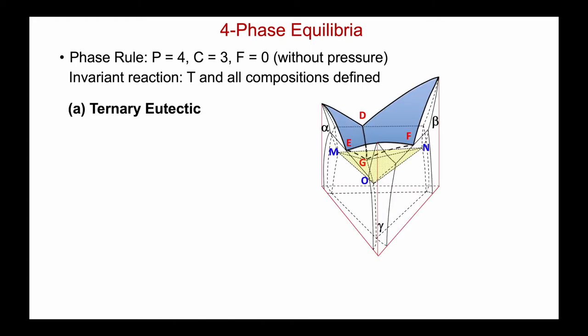First, we'll look at a ternary eutectic, where every binary contains a eutectic. The three eutectic valleys meet at a common point, which is called the ternary eutectic. Here's our space diagram: AB has a eutectic, BC a eutectic, AC a eutectic. The eutectic liquids in each of those three binaries are D, E, and F — they're all rolling downhill — and they meet at G, which is the ternary eutectic liquid.